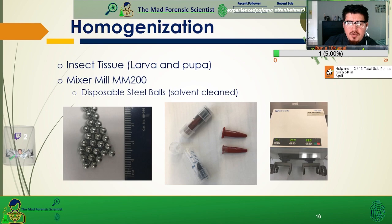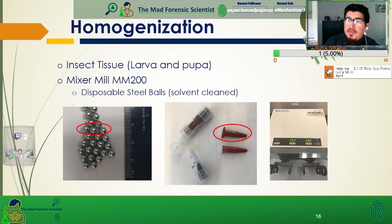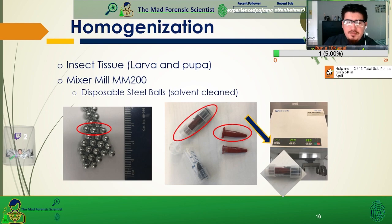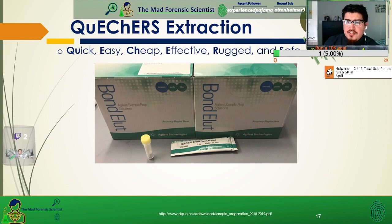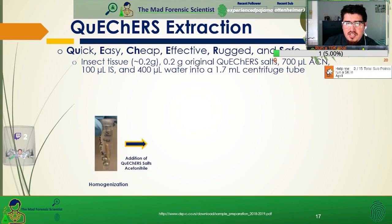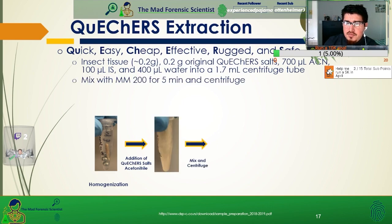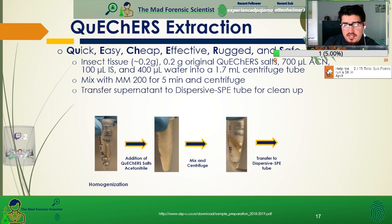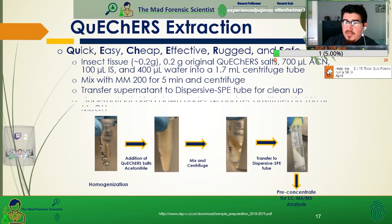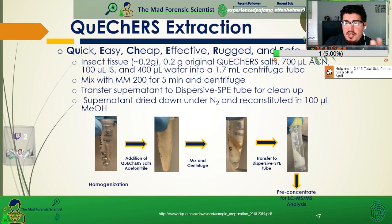An important step for this process was the homogenization. We took the insect tissue — either larvae or pupa — and used a Mixer Mill MM200 with disposable steel balls that were solvent-cleaned. Three steel balls were placed into the centrifuge tube and the tissue was pulverized at a high rate to really grind it up and make extraction possible. The QuEChERS extraction — which stands for Quick, Easy, Cheap, Effective, Rugged, and Safe — takes the insect tissue with QuEChERS salt, acetonitrile, internal standard, and water into a single tube. After mixing with the mixer mill and centrifugation to create a distinctive layer, the top layer was taken to dispersive SPE tubes for cleanup, then centrifuged again and the supernatant was taken off. It was dried down, reconstituted, and then injected on the LC-MS for quantitation.